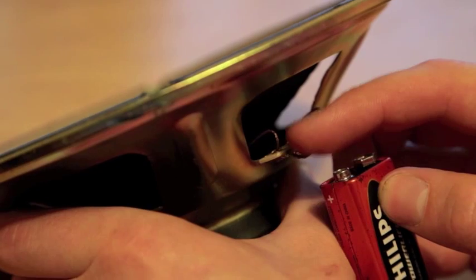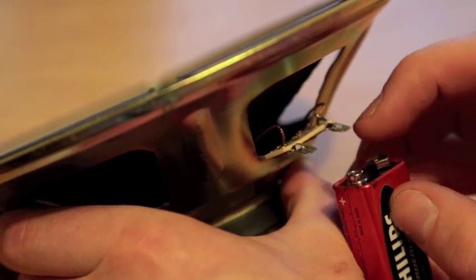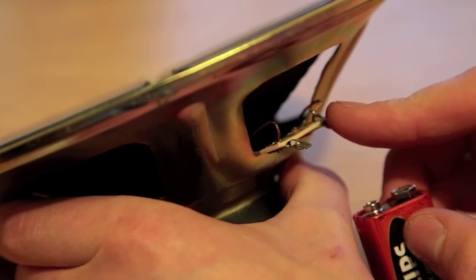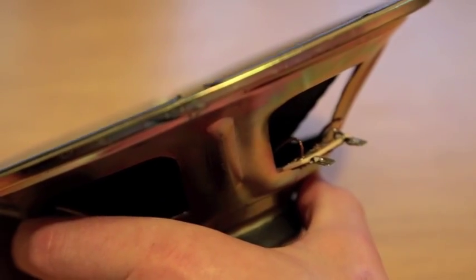Now we can tell that this here on the right is our negative, this here on the left is positive. So we attach our red wire to the left and our black wire to the right. That's how you quickly tell your positive and negative.